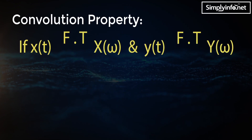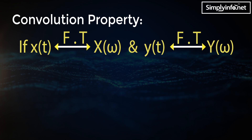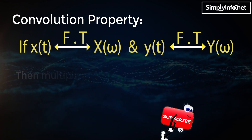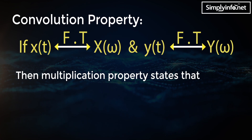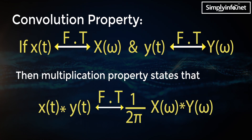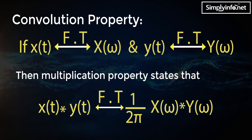Convolution property: if Fourier transform of x(t) is X(ω) and Fourier transform of y(t) is Y(ω), then the convolution property states that Fourier transform of the convolution of x(t) and y(t) is equal to (1/2π) · X(ω) · Y(ω).